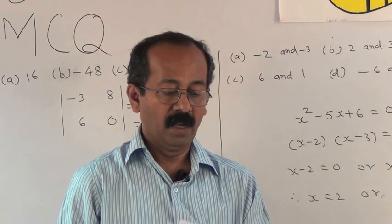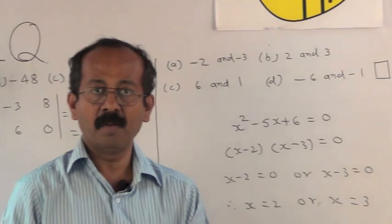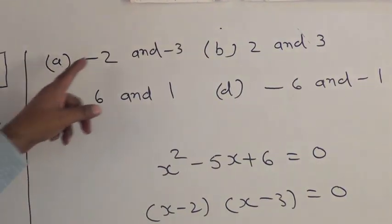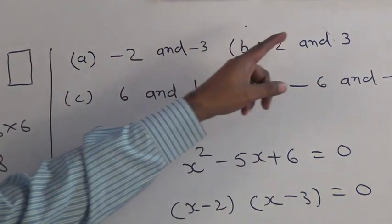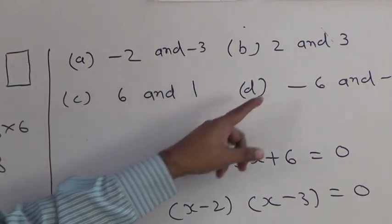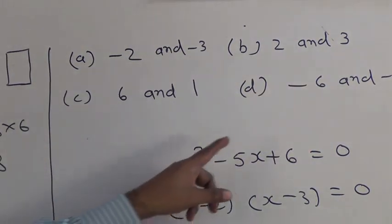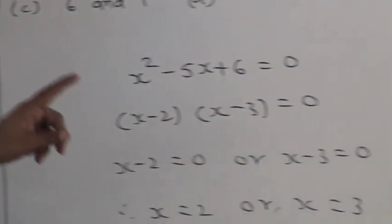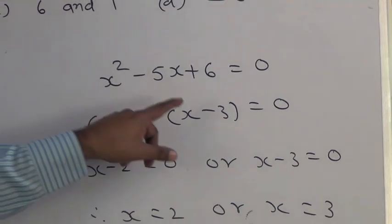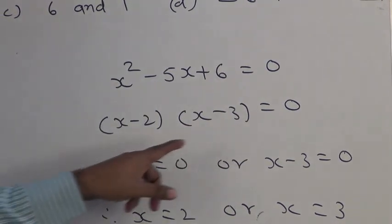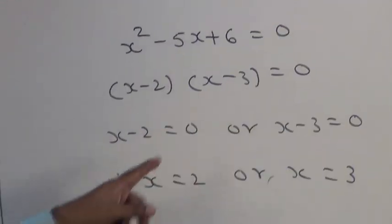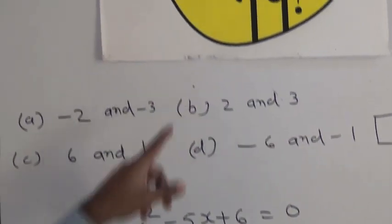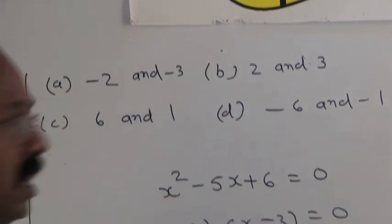Next example: write the roots of the quadratic equation x² − 5x + 6 = 0. The alternatives are a) −2 and −3, b) 2 and 3, c) 6 and 1, d) −6 and −1. After factorizing, the factors are (x − 2)(x − 3) = 0, so x − 2 = 0 or x − 3 = 0. Therefore x = 2 or x = 3, and alternative b represents the answer 2 and 3. So the correct alternative is b.